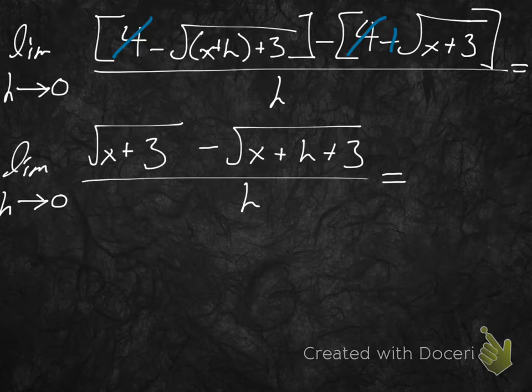Now we need to eliminate the square root terms in the numerator by multiplying by the conjugate of the numerator divided by itself. There are algebraic reasons for doing this — it's not specific to calculus. Multiplying by the conjugate is simple conceptually, but it's murder to do without mistakes, so that's the problem.